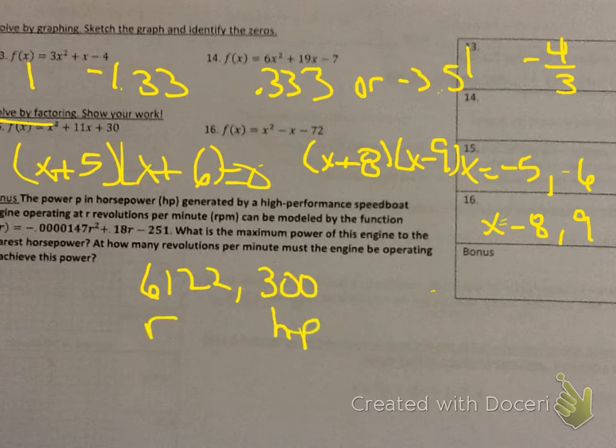On the bonus — if they ask for a maximum or a minimum, they're basically asking you to find the vertex. So if you use negative b over 2a, you will get 6,122. Take that and plug it back into R, and that will give you 300. This is your maximum point: 300 represents the horsepower, and 6,122 represents the revolutions per minute.